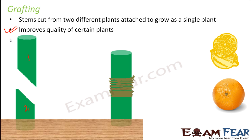Grafting is very commonly done with citrus plants — for example, many people try to combine traits of lemon and orange by taking one stem from a lemon plant and one from an orange plant and growing them as one plant. So all these techniques — cutting, layering, and grafting — are examples where new plants are formed from one single plant, which is why they are all asexual reproduction.